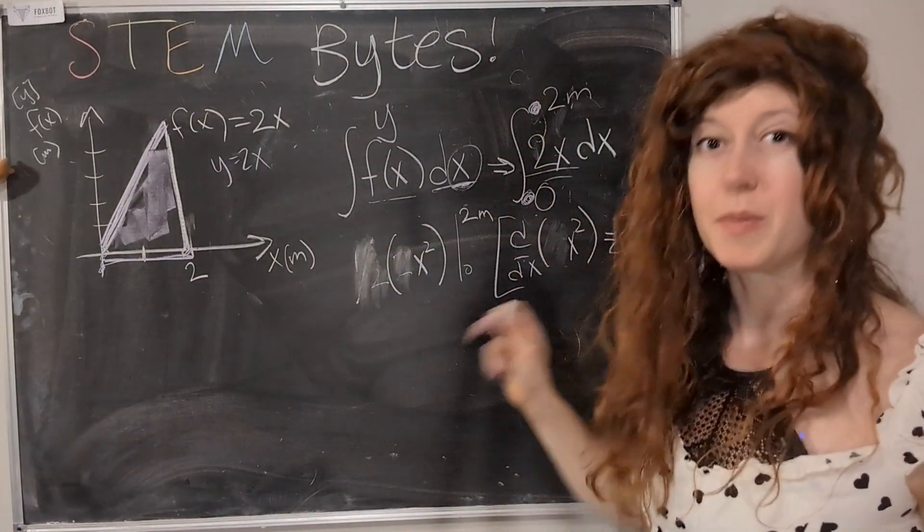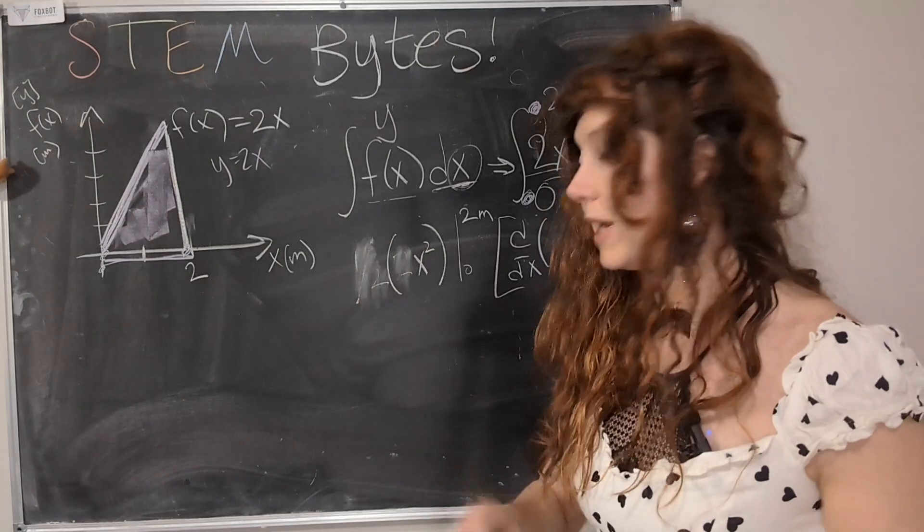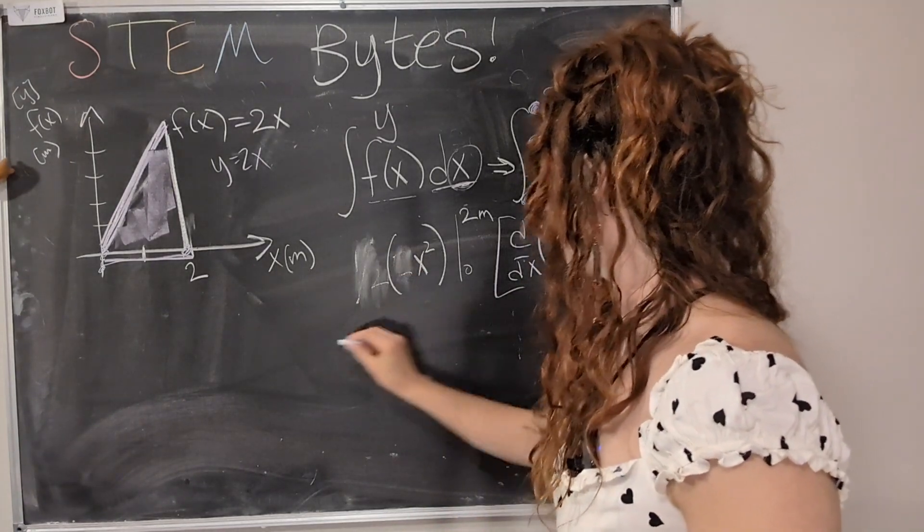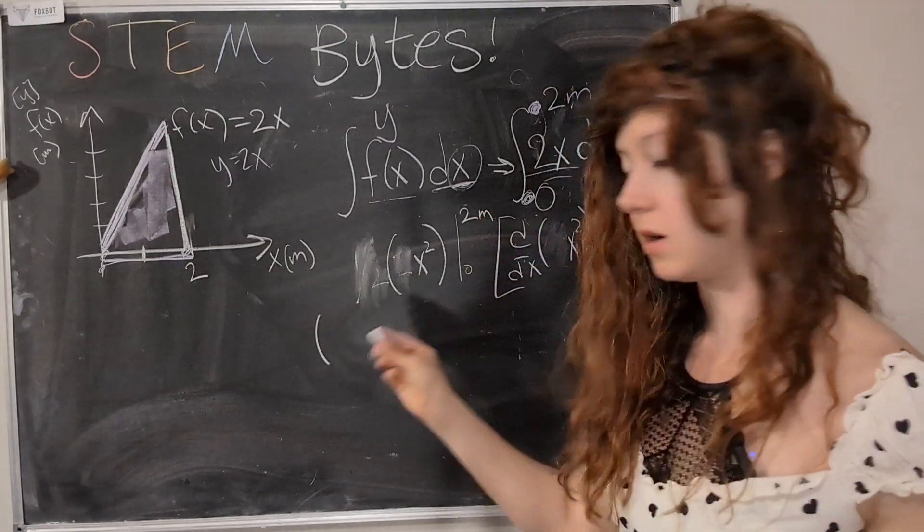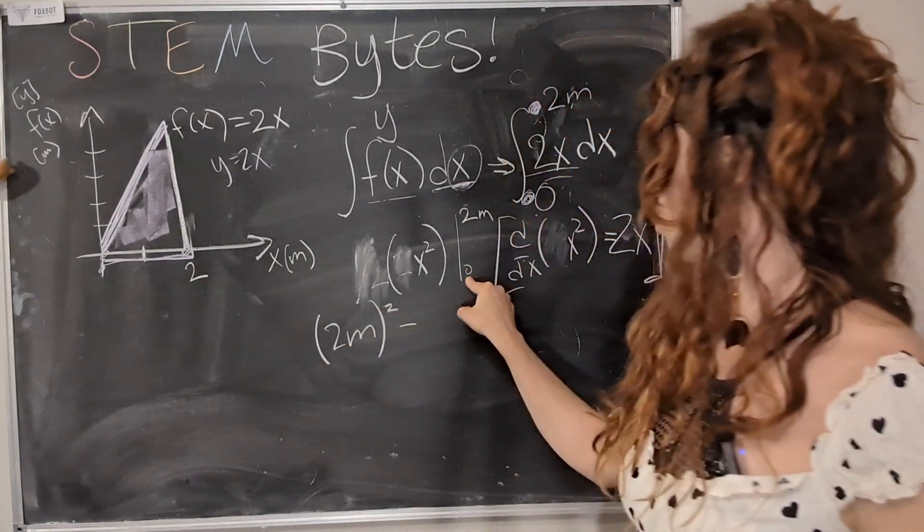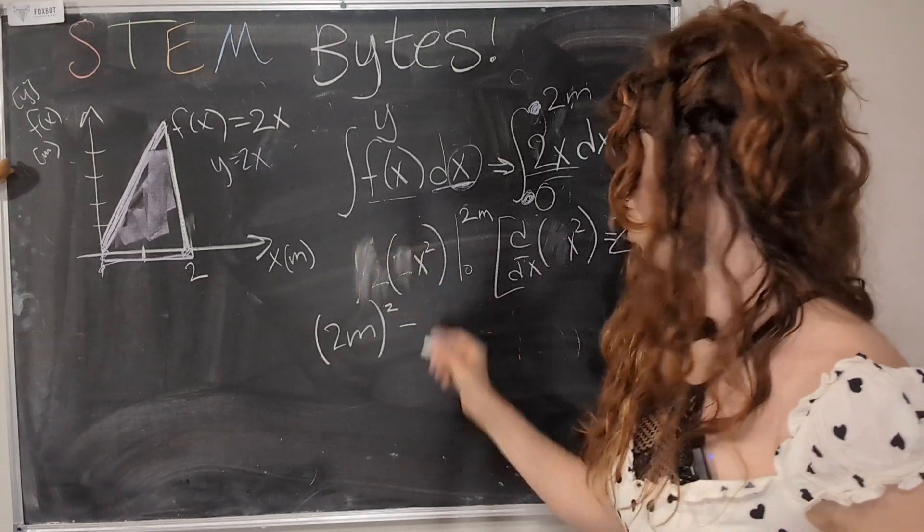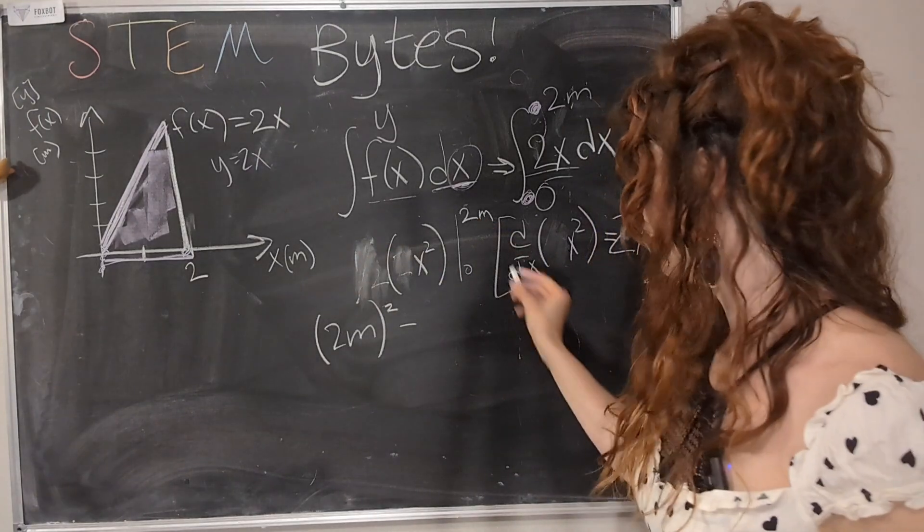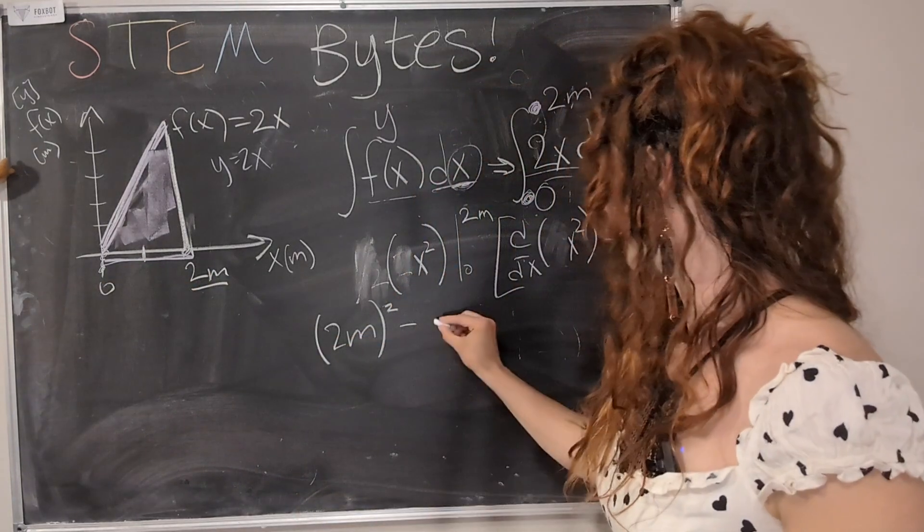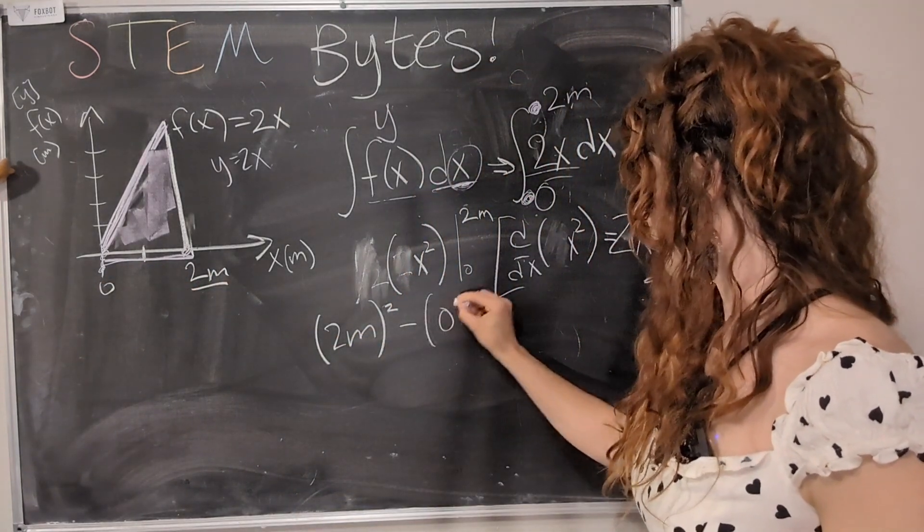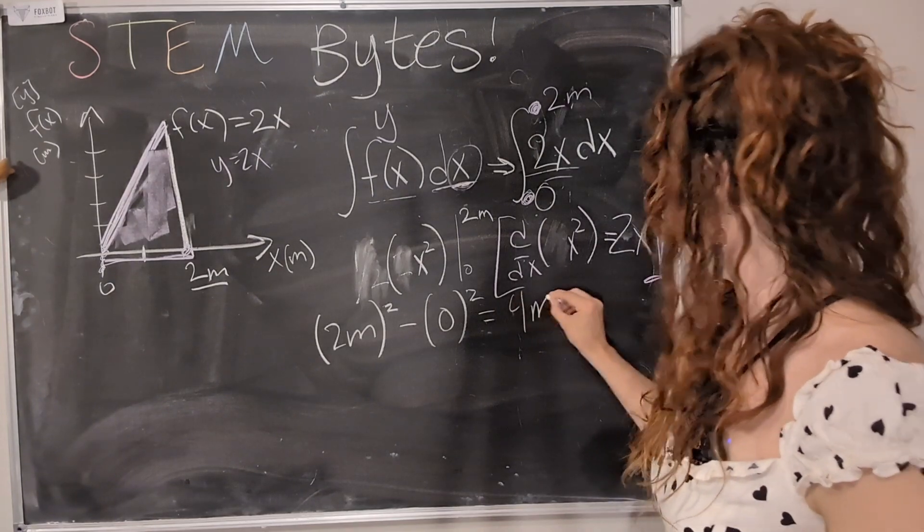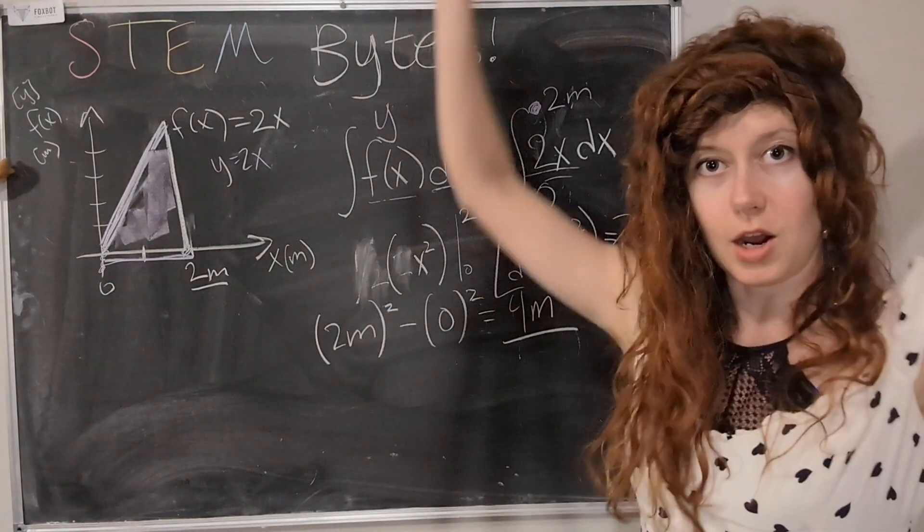Okay, so we checked our work, and we're like, heck yeah, the derivative of 2x is x squared. Now we apply the integrand, basically where we are taking the integral from. And that means that we plug these numbers in. So we say 2 meters squared, and then we subtract from the initial point. So final minus initial. And we are going from 0 to 2. So 2 meters is our final. 0 is our starting point. And so we just subtract 0 squared. And this is going to be 4 meters squared. Ta-da!